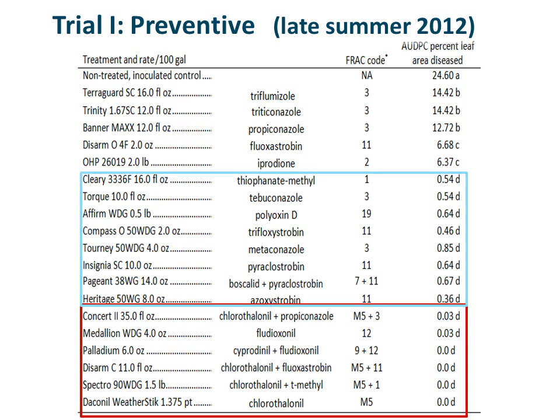Although the products in the blue box did not entirely prevent the fungus from getting established, they were fairly effective at keeping the disease in check. The most effective products in the red box contained either the active ingredient chlorothalonil or the active ingredient flutioxanil. Chlorothalonil can be found by itself in the fungicide Daconil Weatherstick, or as a premixed product in the fungicides Spectro, Disarm-C, and Concert-2. Flutioxanil can be found in Medallion or in the premixed product Palladium.